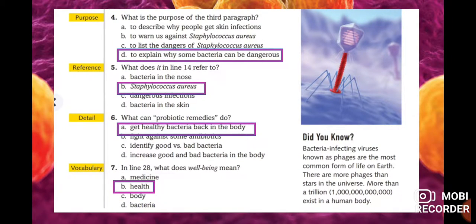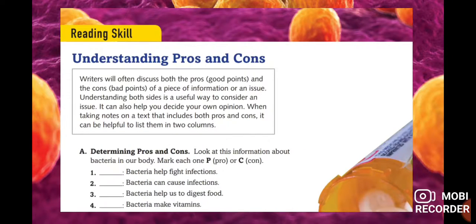Question seven: in line 28, what does 'well-being' mean — medicine, health, body, or bacteria? It refers to health. Did you know that bacteria infecting viruses known as phages are the most common form of life on Earth? There are more phages than stars in the universe — more than a trillion exist in a human body.